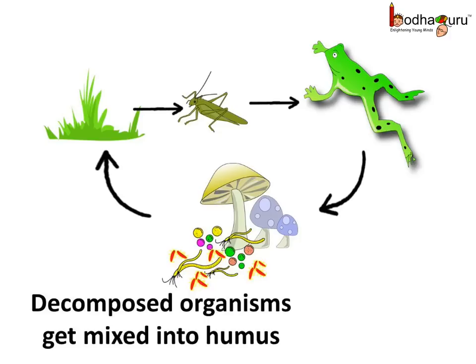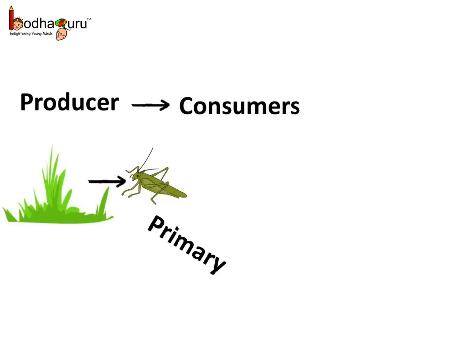It's a wonderful cycle. The life goes on in a way that no nutrients are lost in nature. The plants absorb the nutrients from nature and produce food. They are called producers.